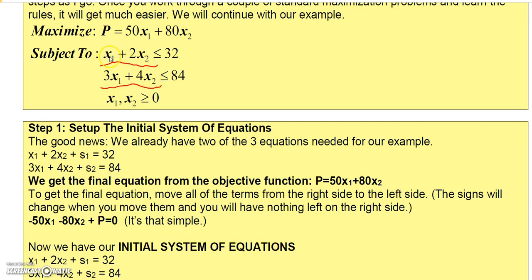What I've got to do is take each less-than inequality and convert them to equations by adding a slack variable. So I take x1 plus 2x2 and add a slack variable S1, and that gives me the equation equal to 32. Then the second one, 3x1 plus 4x2, I add a slack variable S2, giving me 3x1 plus 4x2 plus S2 equals 84. These slack variables have to be greater than or equal to zero.